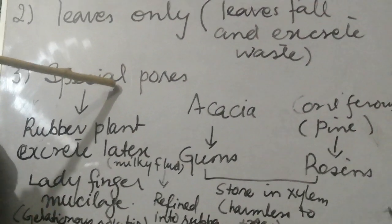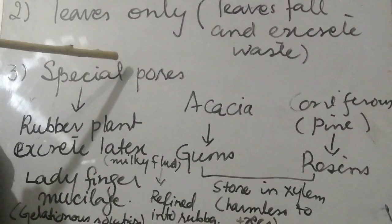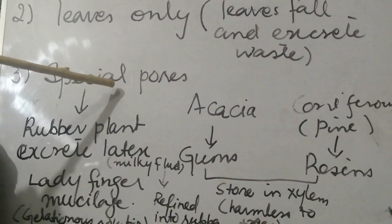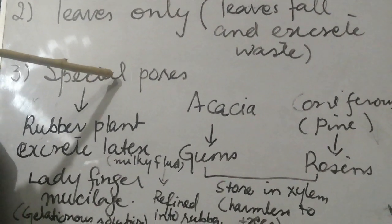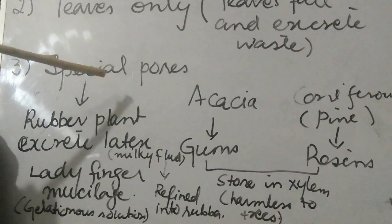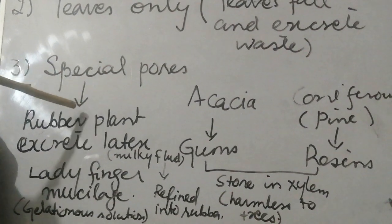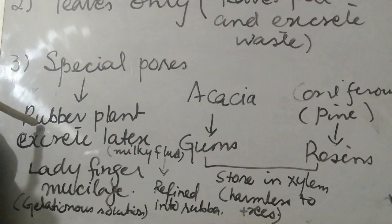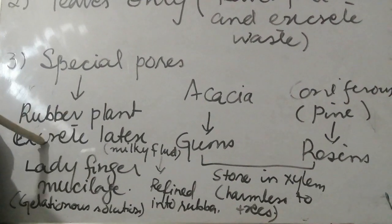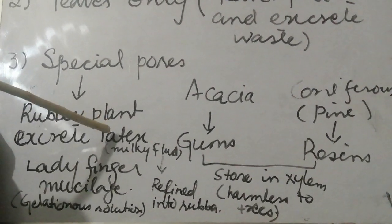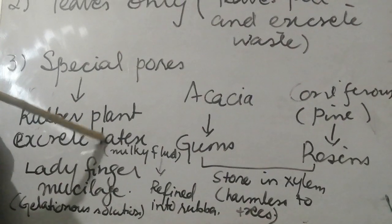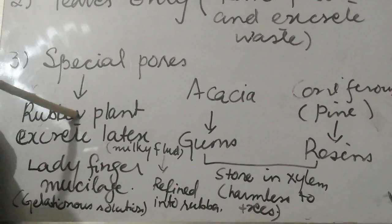Third, some plants excrete their waste through special pores by applying force. This force may be hydrostatic pressure or some absorptive forces that are involved in the elimination of organic waste. For example, the rubber plant excretes latex, which is the organic waste excreted from the rubber plant.